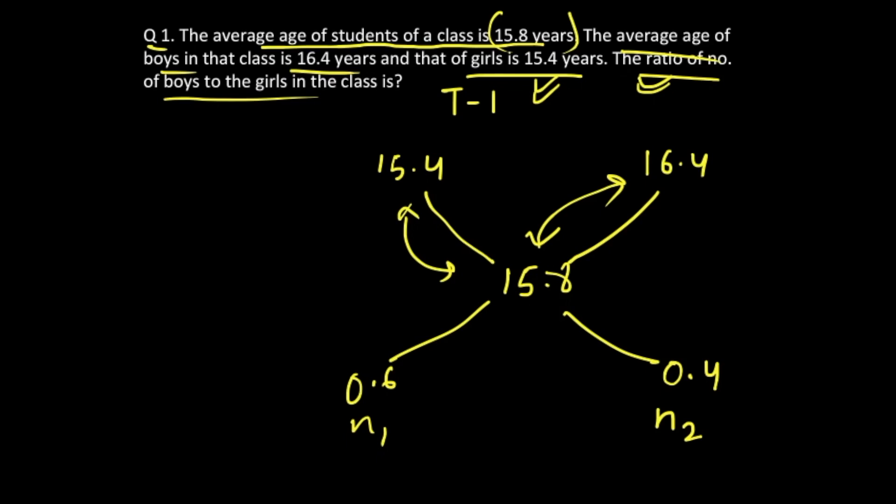So the ratio of boys and girls in that class would be 0.6 upon 0.4. You will write n1 upon n2, but here we have written the girls' age over here and the boys' age over here, so this is actually girls to boys.